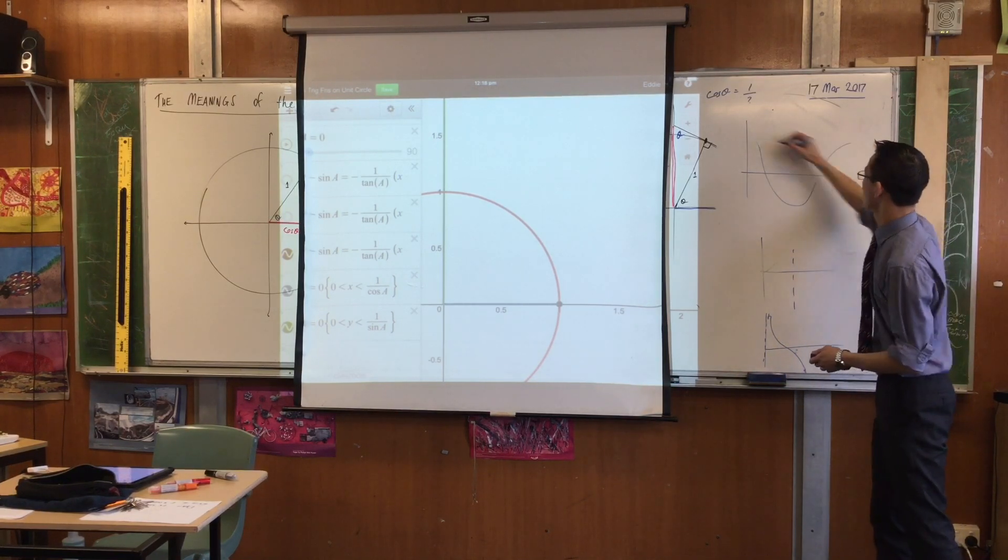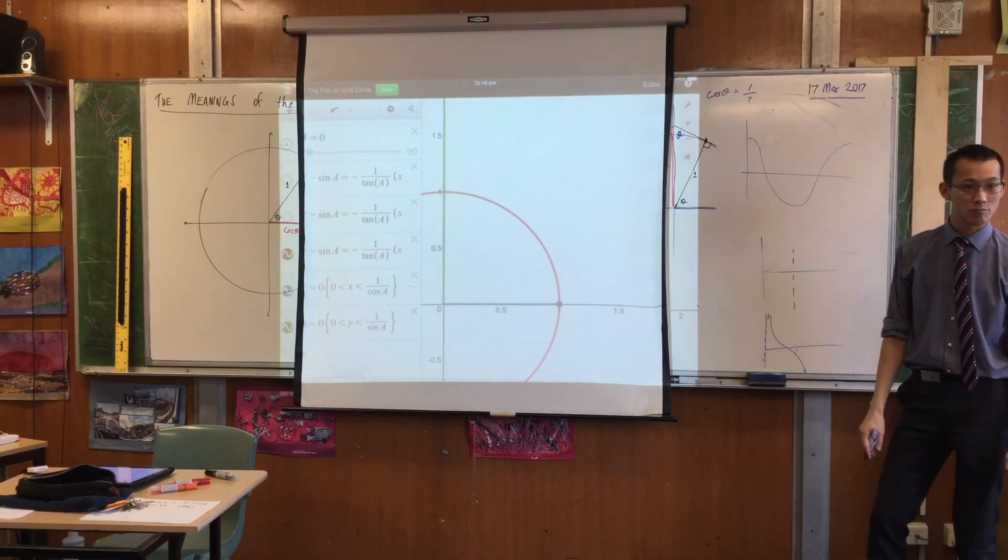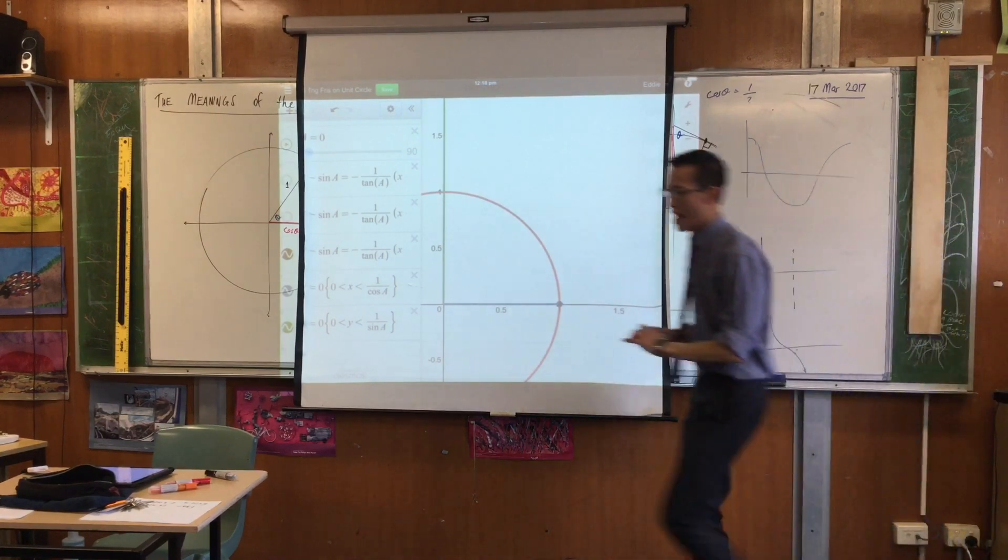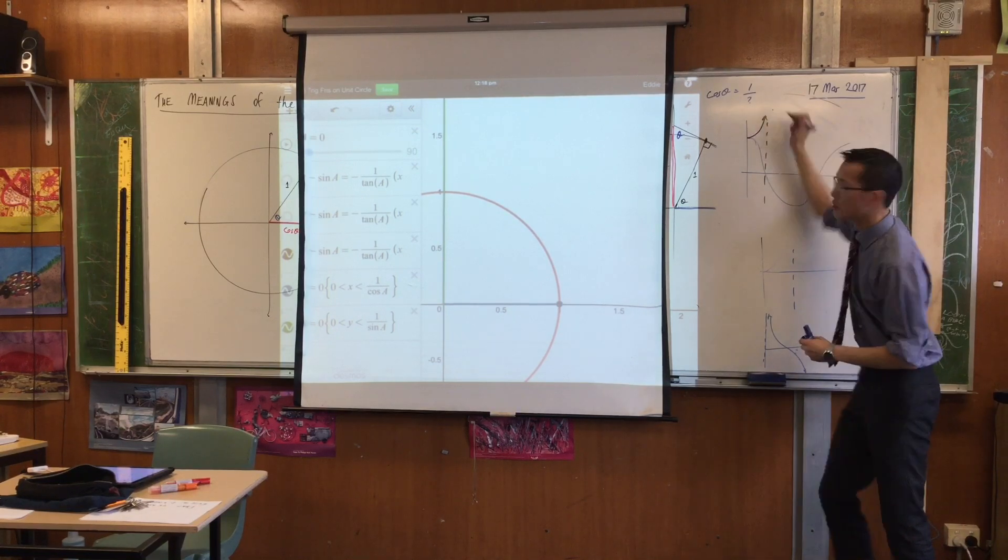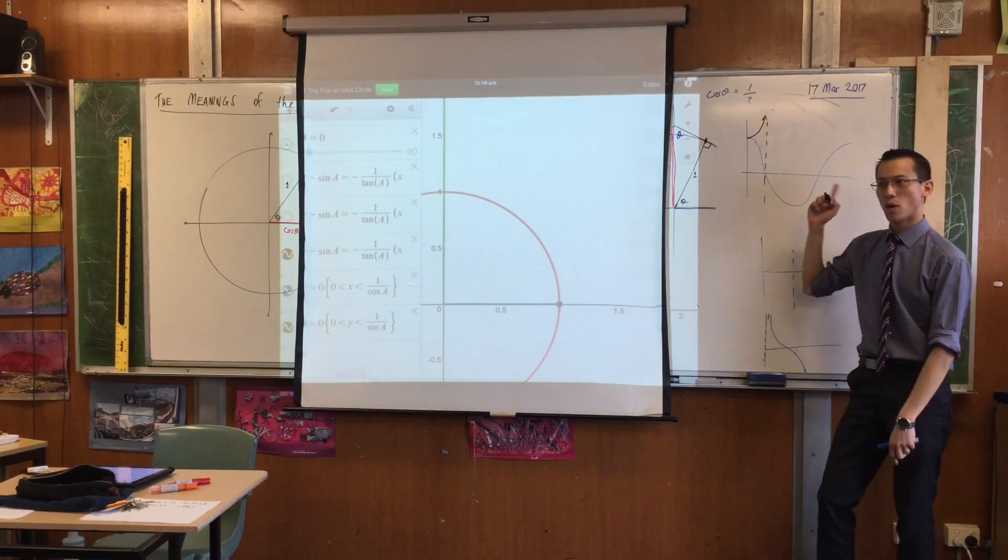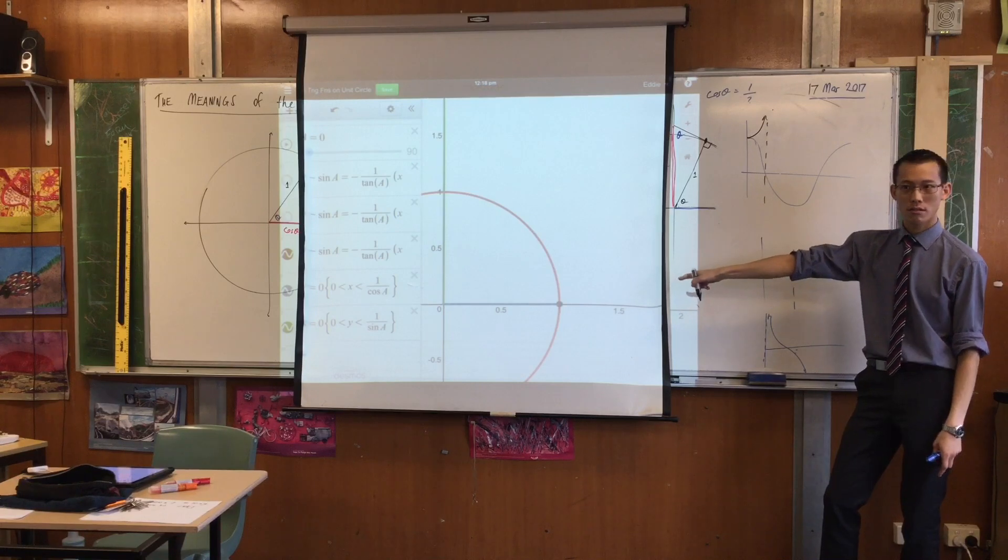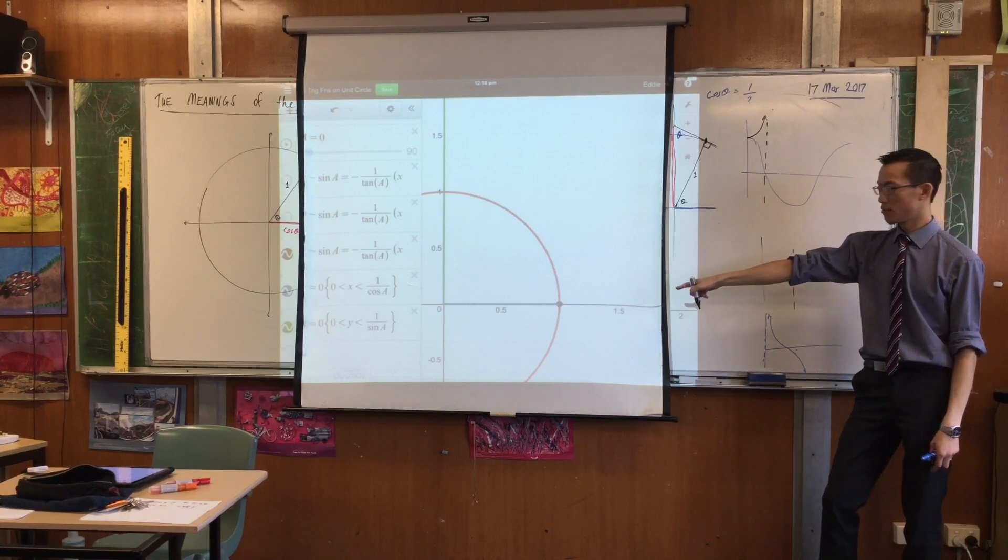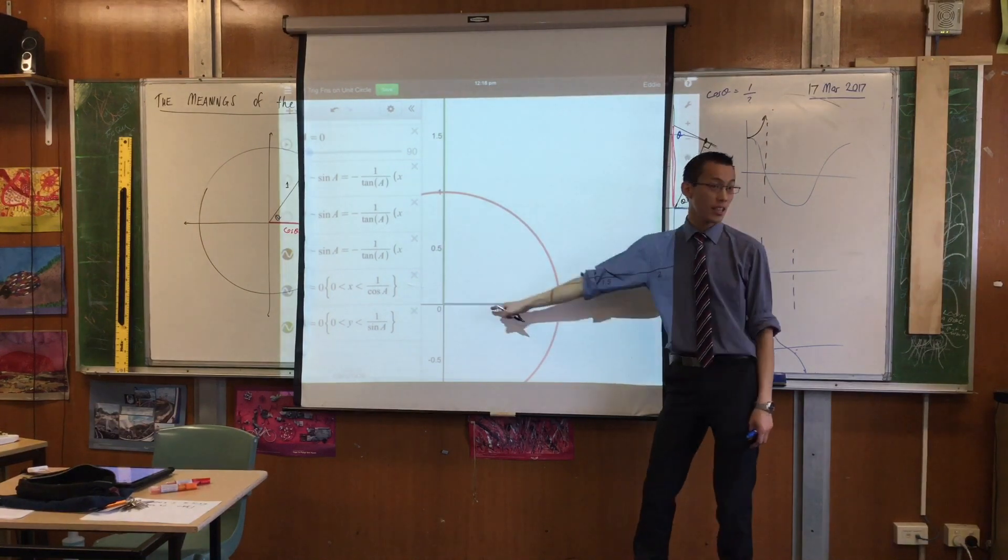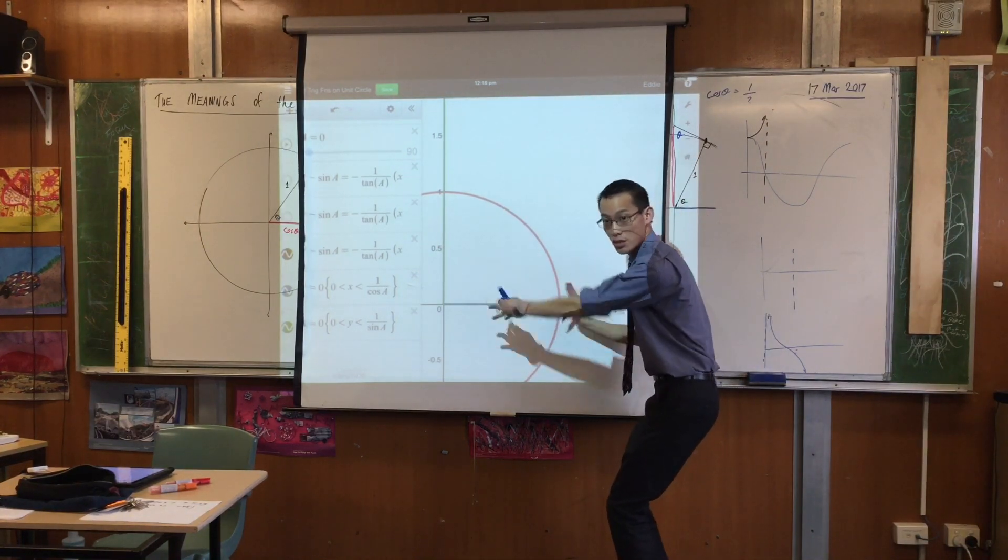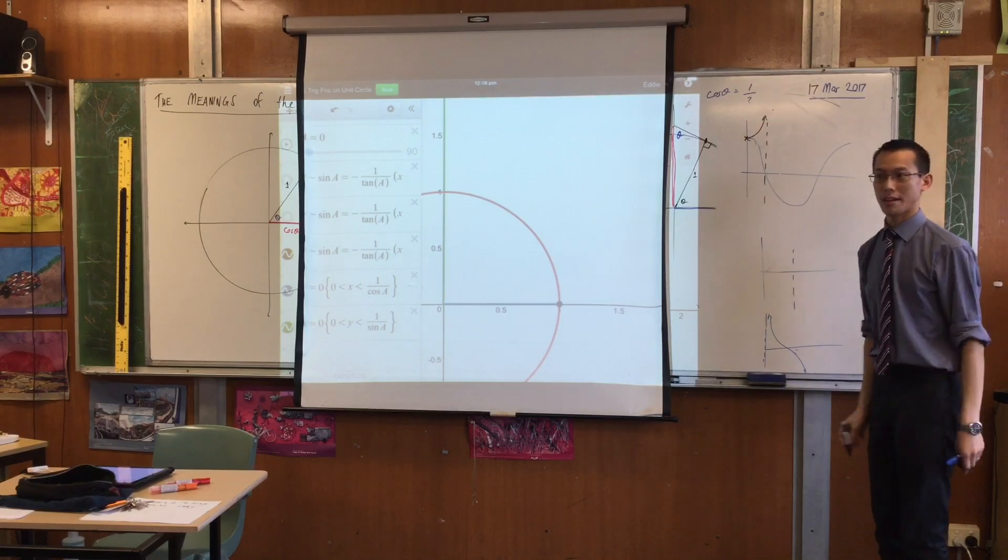So here's the cos graph. Right? So the sec graph looks like this. Like that. It starts at 1. Why does it start at 1? Look at it. There it is. Because sec at that particular moment is the radius of the unit circle. Which is 1.